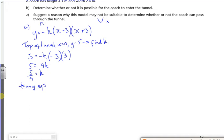to write that down in case I've gone too fast. So this is minus 5 over 9 times (x minus 3)(x plus 3) there.